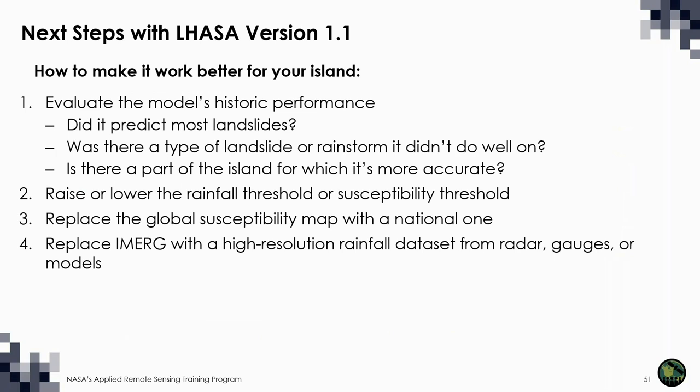As we saw in the case of Rio de Janeiro, a localized version of the model can outperform the global landslide nowcast and greatly reduce the number of false alarms. While you could switch to a different kind of tool at the local scale, such as a physically-based geotechnical model, there are some steps that can improve LASA. I recommend starting by evaluating the model's current performance and thinking about what you want to improve. Then you can try things like replacing the susceptibility map or rainfall data.